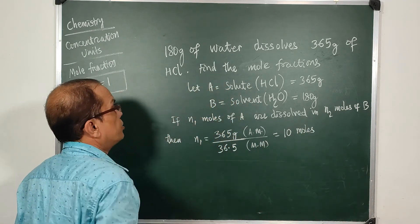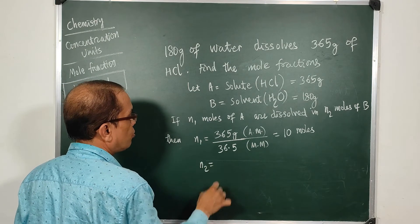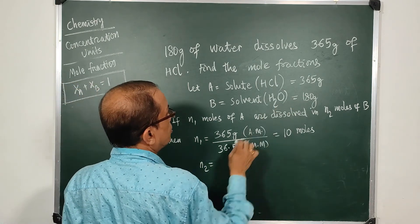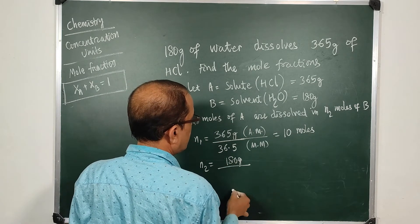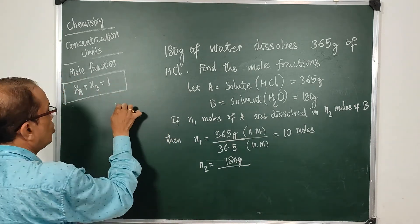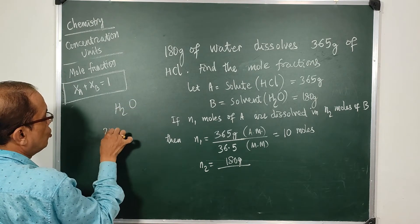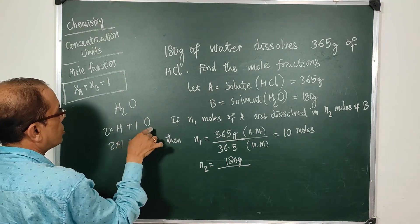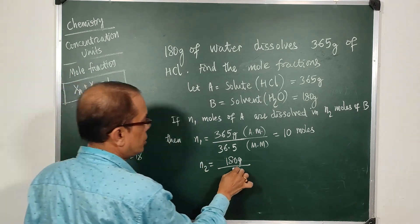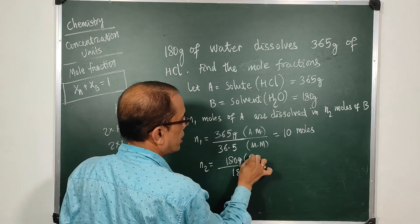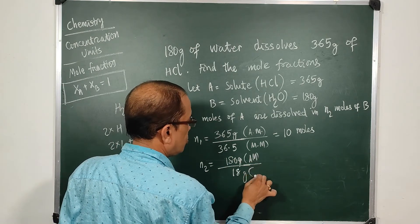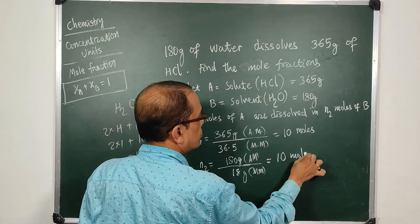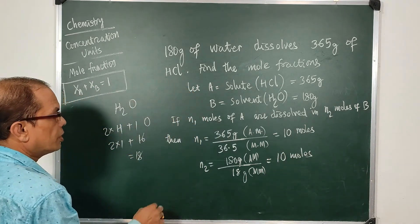And in case of the solvent, we have n2 number of moles. The actual mass is 180 grams divided by the molecular mass of water. What is molecular mass of water? There are two hydrogens and one oxygen, so 2 times 1 plus oxygen is 16, so 18. This is actual mass and this is molecular mass, so when we divide we get 10 moles again.